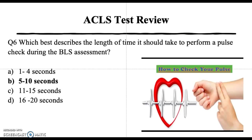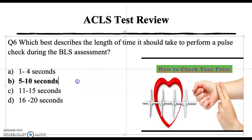Question 6: which best describes the length of time it should take to perform a pulse check during the BLS assessment? A) 1 to 4 seconds, B) 5 to 10 seconds, C) 11 to 15 seconds, D) 16 to 20 seconds. The correct answer is B — 5 to 10 seconds.